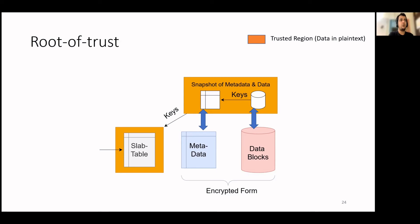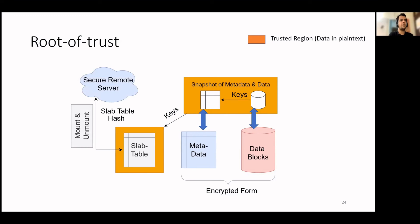Now, while unmounting, we must ensure that the attacker cannot replay this data back. Intel SGX only guarantees confidentiality and integrity — freshness is not a part of the semantics. To solve this issue, we introduce a step where during the unmounting of the volume, the hash of the slab table is calculated and sent to a secure remote server. This ensures that during the next mount, there is a key and hash dependency between the slab table and the data. Note that this is only required during the mounting and unmounting of the volume. When the volume is mounted, all the operations are handled by the metadata or the slab table locally on the system. Recently, Intel allows secure monotonic counters, which can also be used to ensure the freshness of the data locally. However, they are limited in terms of how many updates can be done on them.